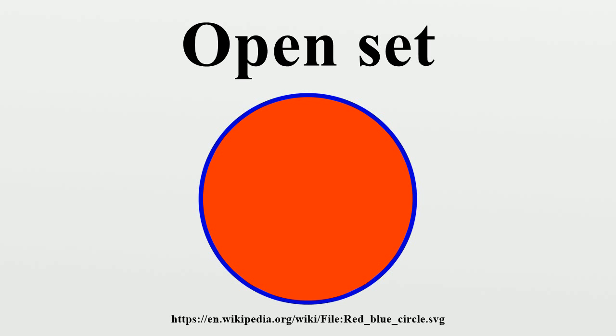Once a choice of open sets is made, the properties of continuity, connectedness, and compactness, which use notions of nearness, can be defined using these open sets. Each choice of open sets for a space is called a topology.